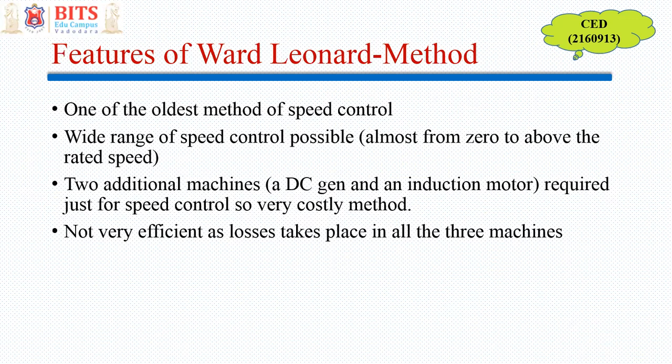However, two additional machines are required just to achieve speed control of the DC motor — an additional DC generator and an induction motor. So this is a very costly method. Efficiency is also lower because losses occur in all three machines. It is a very inefficient and costly method, used only when speed variation was absolutely essential and cost was not an issue. This is an obsolete method — this is not what we use these days.